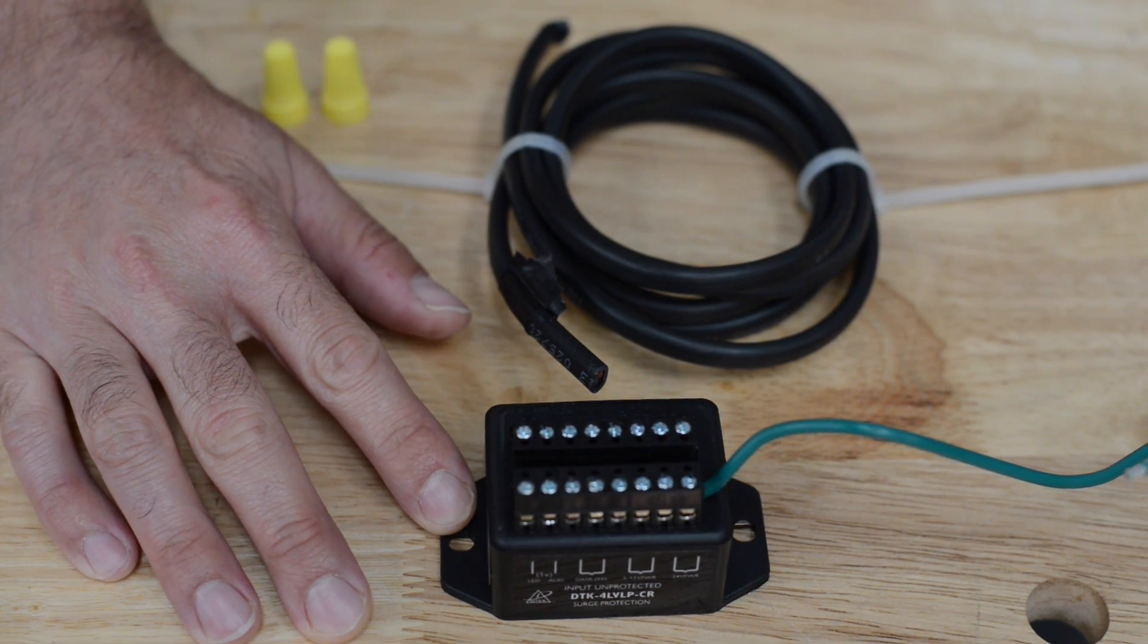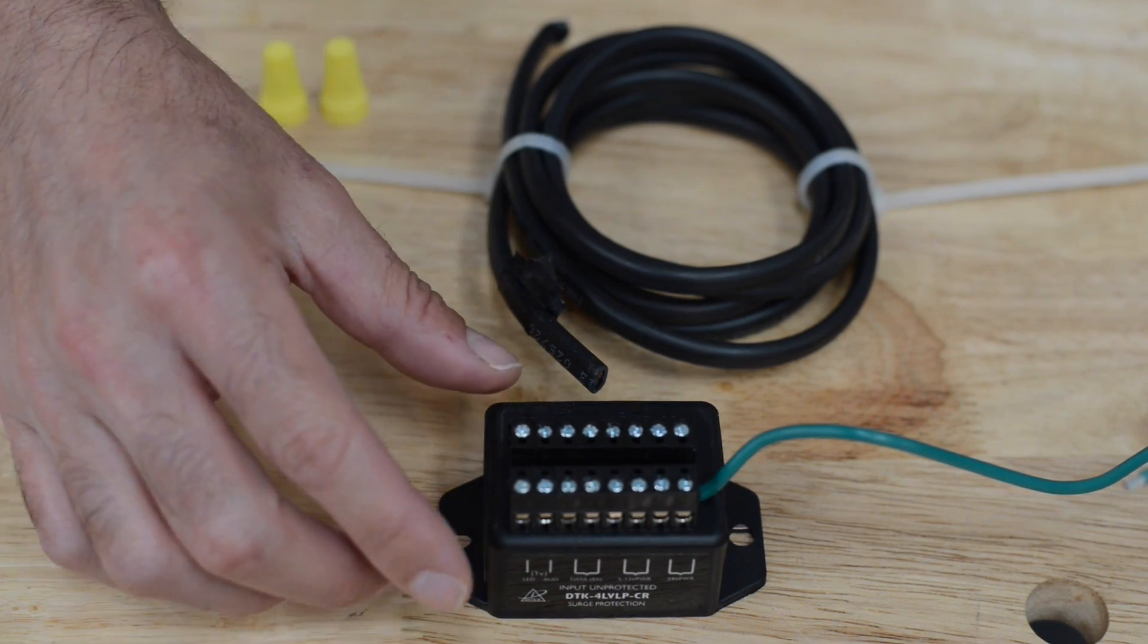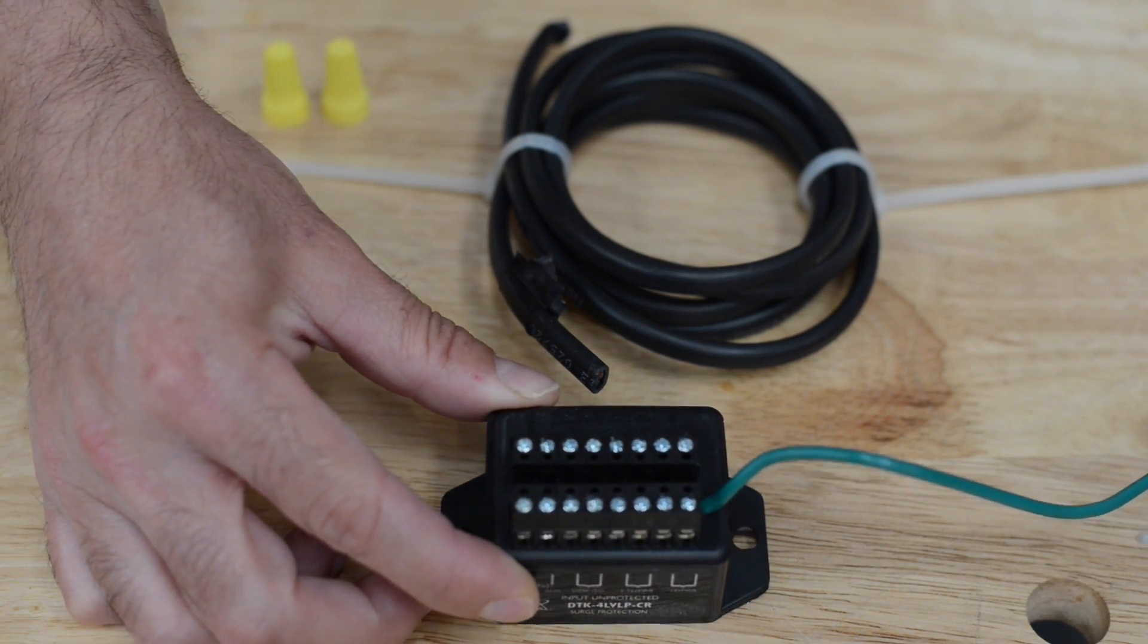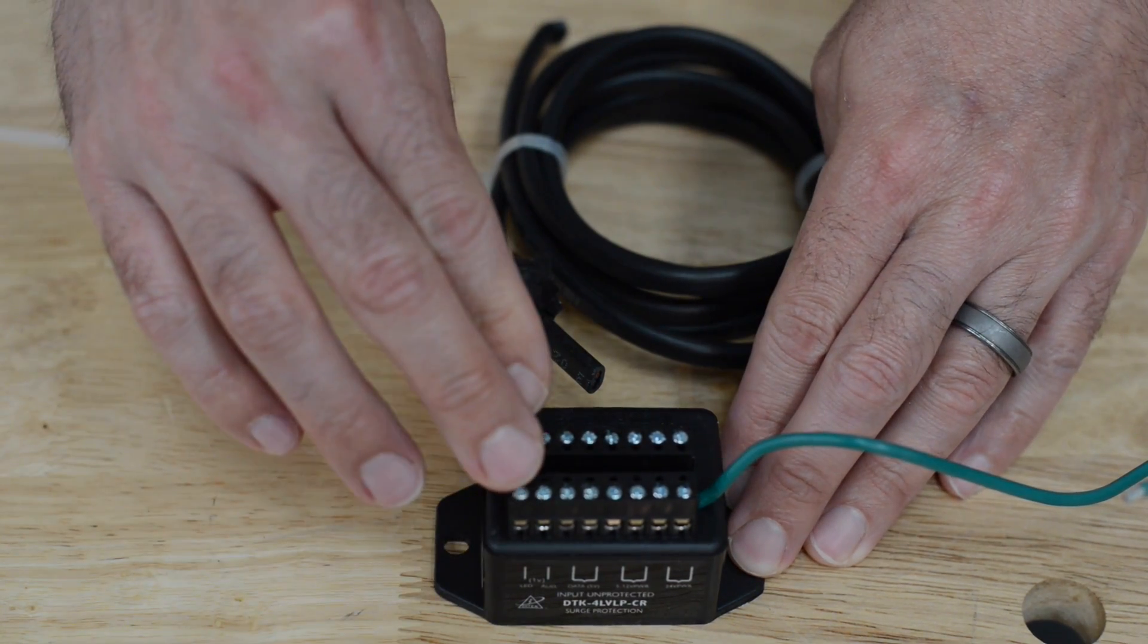We're going to talk about the Ditec Surge Suppressor. The Ditec Surge Suppressor is an inline surge suppressor. In general, this interrupts any incoming lines to your gate opener.